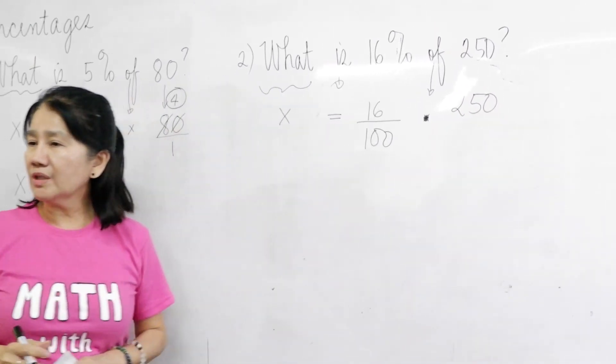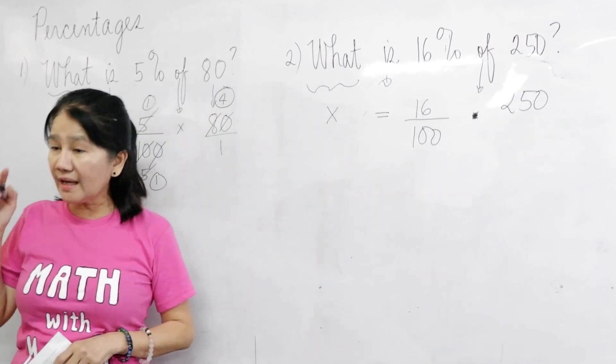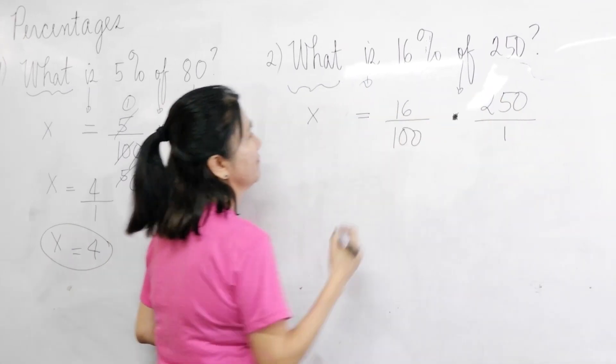250. Okay. What do you think is the denominator? 250 here. This is all over? Rael? 1. 1. Correct. Very good. There.